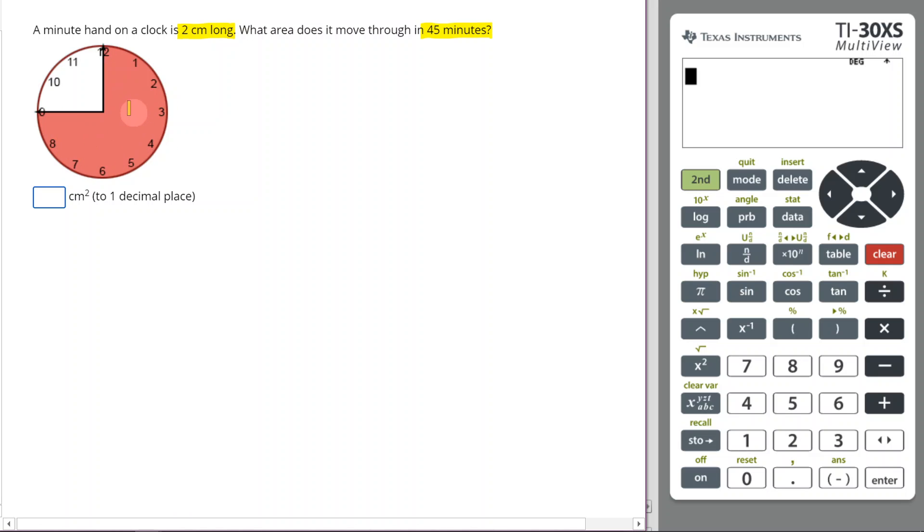We need to find this shaded area. Now it says that our minute hand is two centimeters long, so this here is our minute hand, this one right here, and that is two centimeters long.